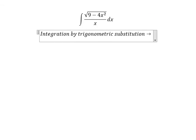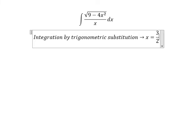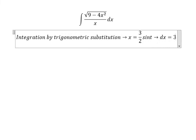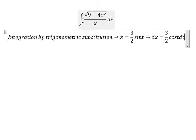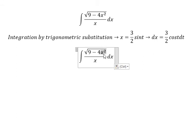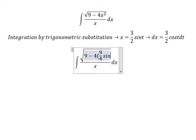We put x equal to 3 over 2 sin(t), so dx equals 3 over 2 cos(t) dt. We substitute this into the integral and get 9 over 4 sin²(t) inside the expression.